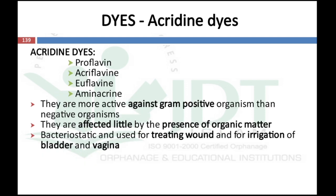The second group of dyes is acridines. Examples are proflavine, acriflavine, euflavine, and aminacrine. They are more active against gram-positive organisms than gram-negative. They are little affected by the presence of organic matter such as blood or pus, so they can be used for disinfection in the presence of organic matter. They are bacteriostatic and are used for treating wounds and irrigation of the bladder and vagina.